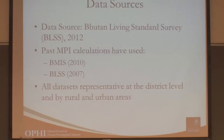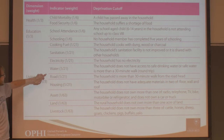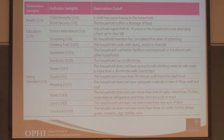The dimensions of Bhutan's MPI are the same as the global MPI: health, education, and living standards. The choice of indicators was affected by the BLSS dataset. Overall, there are 13 indicators — eight are the same as the global MPI — plus three additional indicators: access to roads, land ownership, and livestock ownership, all in the living standards category. Food security is used as a nutrition indicator due to lack of other nutrition data. Housing additionally considers the condition of the wall and roof, not only the floor.